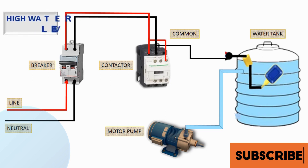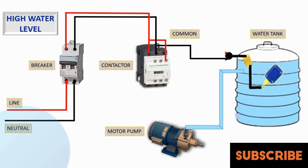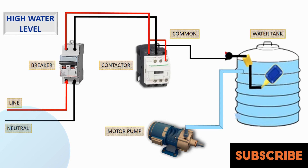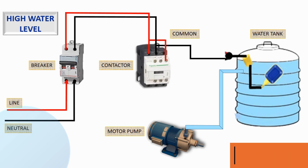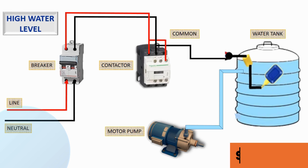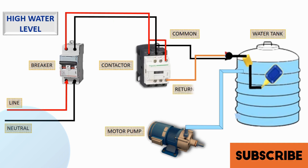High water level — second action: As water levels rise, the float switch reaches a predetermined high level. The control circuit responds by deactivating the motor to prevent overflows. This action maintains the water level within the desired range.